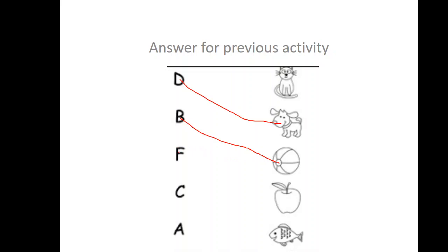You draw the line to the ball. Letter F. F for fish. You draw a line to the fish. F for fish.